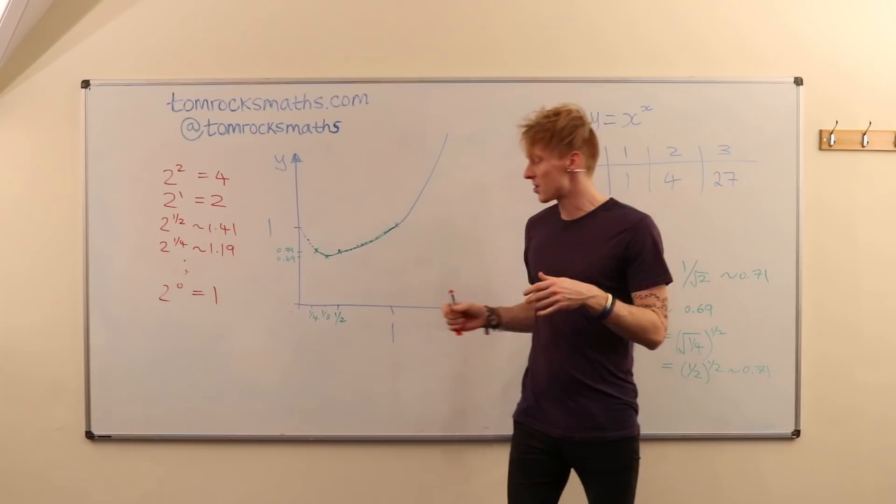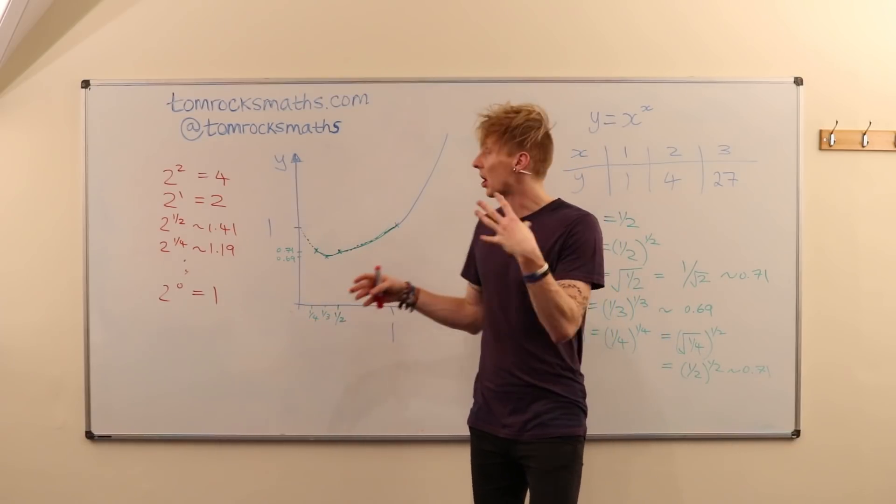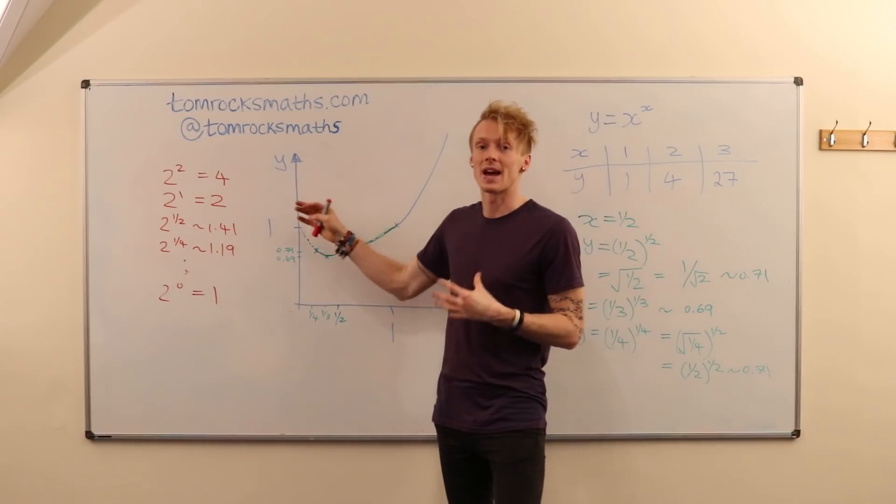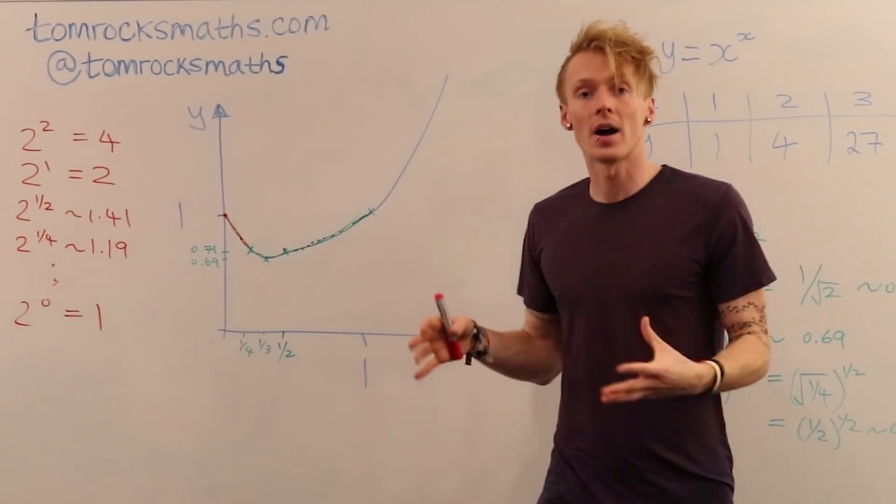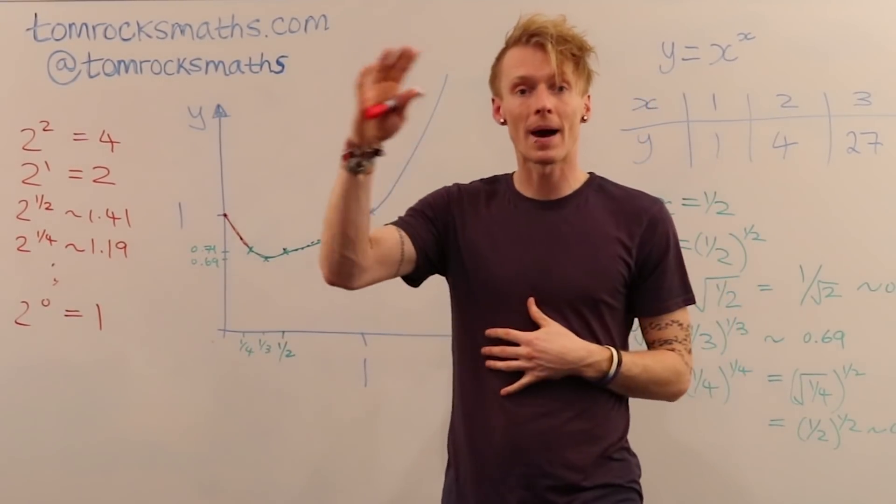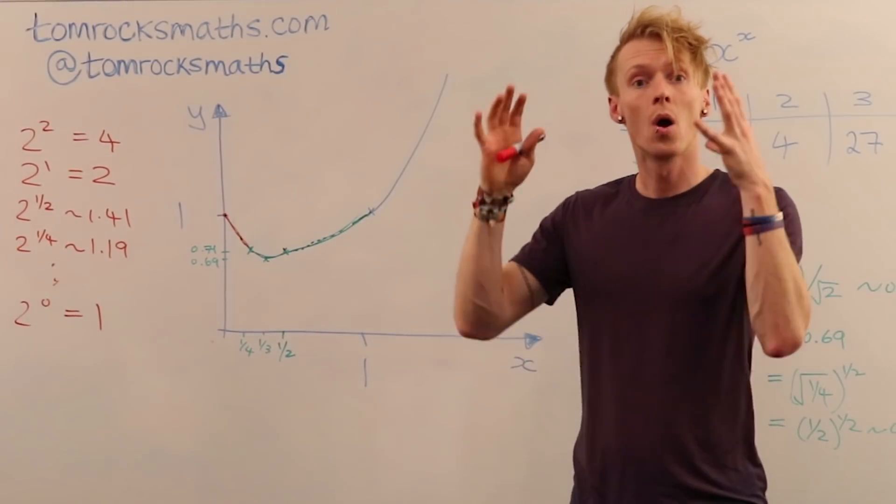And the closer and closer you get to x being 0, the closer and closer your y value gets to 1. And that is the final answer, that is the final part of our graph. 0 to the power 0 is equal to 1.